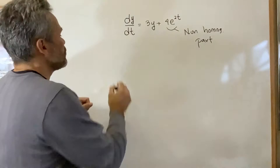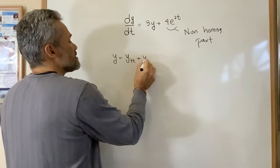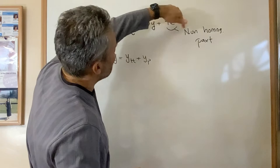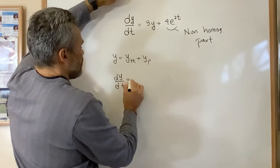The general solution of this differential equation is the solution of the homogeneous plus the particular solution. To find the solution of the homogeneous, we make the non-homogeneous part equal to zero and then we need to solve this homogeneous equation.